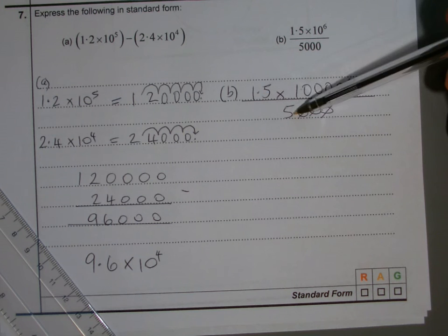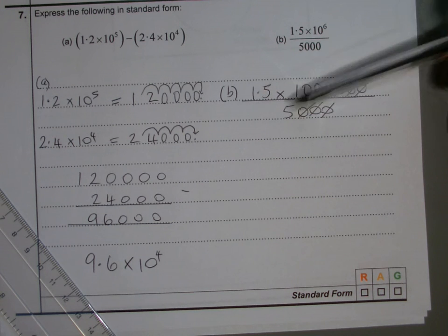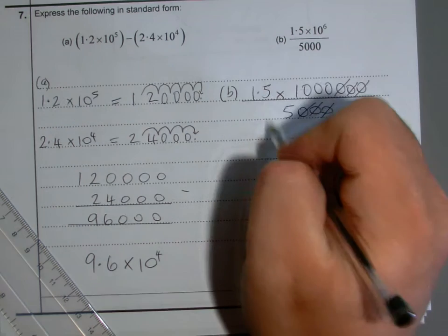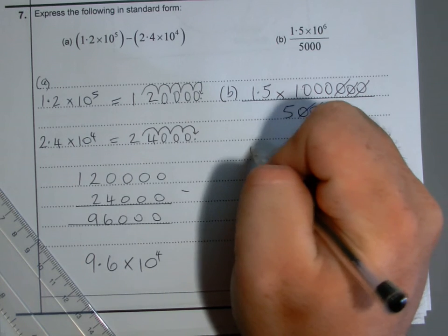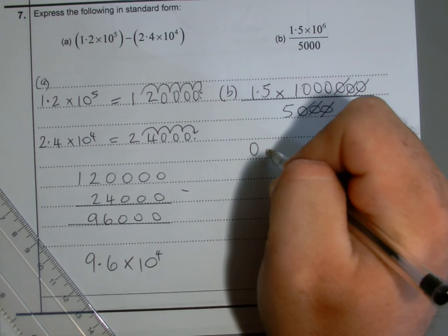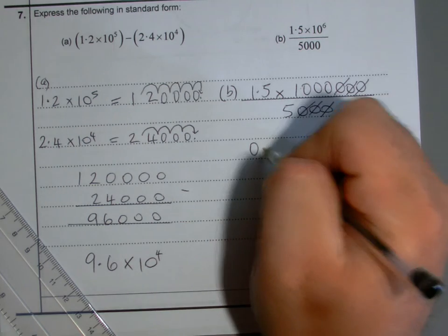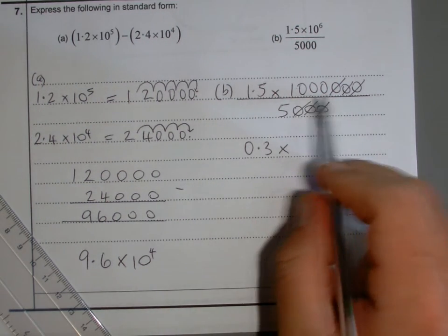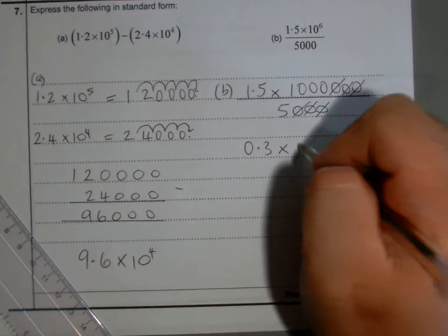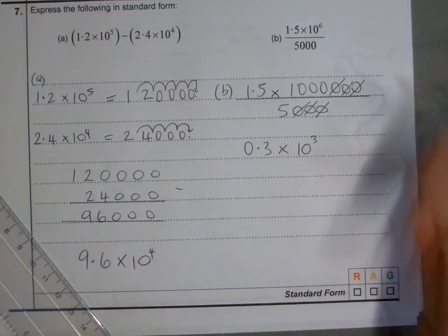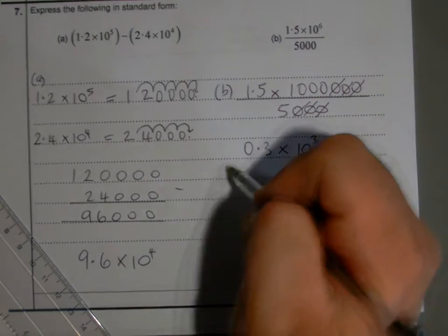So 1.5 divide by 5. 5 goes into 1.5, 0.3 times - because 15 divide by 5 is 3, so 1.5 divide by 5 is 0.3. Then we had that as 1,000, but I'll write that as 10 to the power 3.